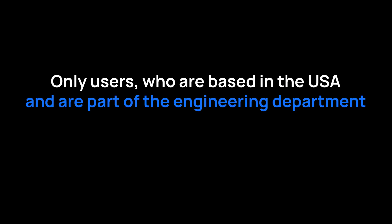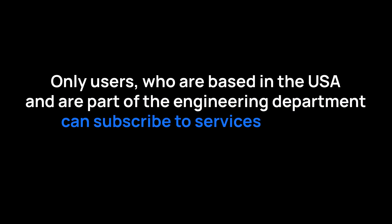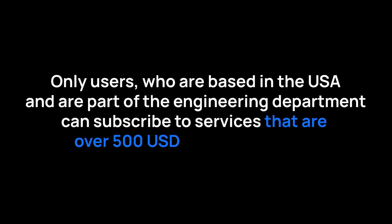I'd like to use this time to guide you through a simple example of how we can create an ABAC policy within Permit. Before we start we need a rule to work with, so for the purpose of the video: only users who are based in the USA and are part of the engineering department can subscribe to services that are over $500 US dollars without approval.